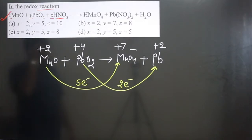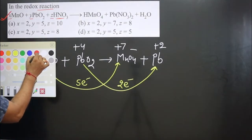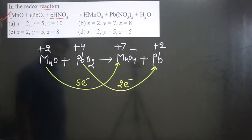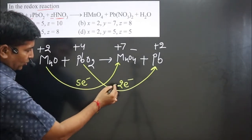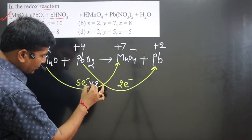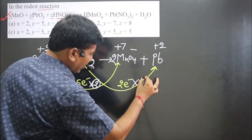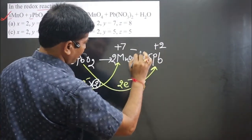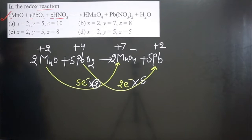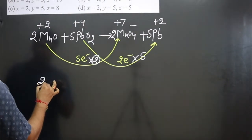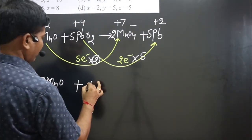To balance the electrons, we cross-multiply: lead has a transfer of two electrons and manganese has five. Multiply lead by five (5×2 = 10) and manganese by two (2×5 = 10). So the coefficients become: two for MnO4−, five for Pb. Both half-equations now show ten electrons transferred — charges are balanced.